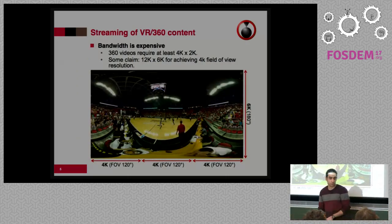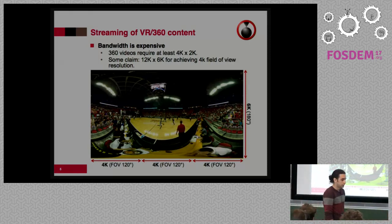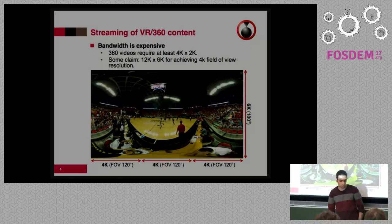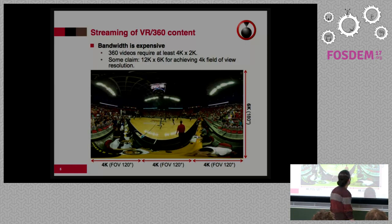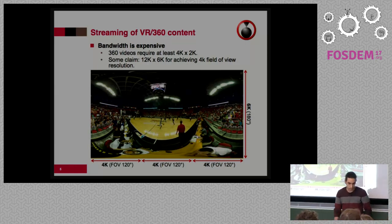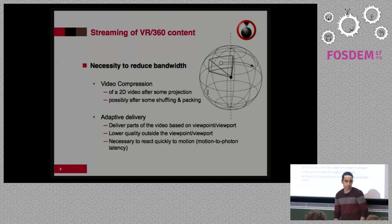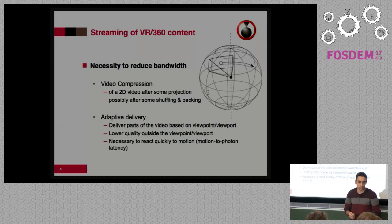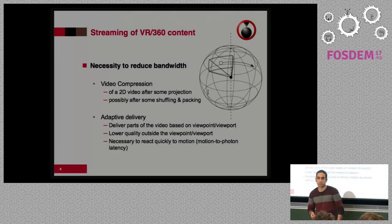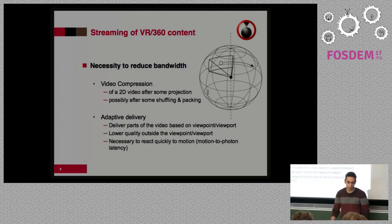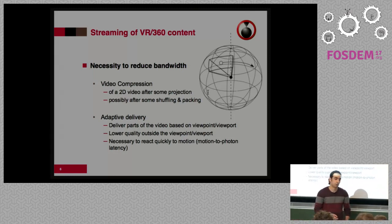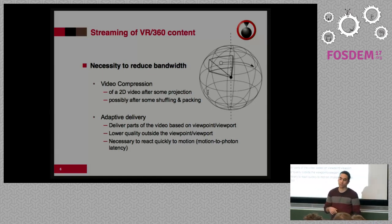I will now talk about the delivery of VR360 content using tiles. As you may know, to play a 360 video it requires at least 4K, but some claim 20K for achieving 4K field-of-view resolution, as shown in the illustration. To achieve this, we have the necessity to reduce the bandwidth. We can do this by acting on the compression — compressing 2D video after some projection or shuffling and packing — or by acting on the delivery side, delivering only part of the video based on the viewport.